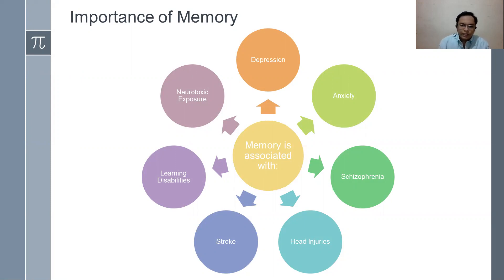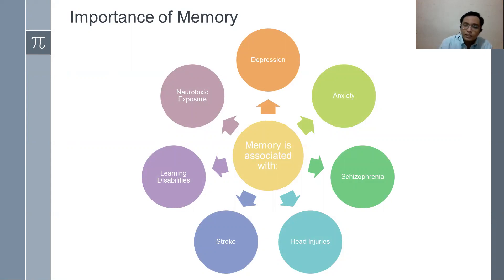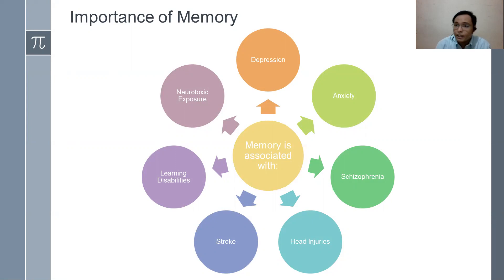In Weschler's idea, memory is associated with the following: it can be used in terms of diagnosing depression, anxiety, schizophrenia, and organic damages like head injuries. Memory can also be used in predicting stroke and determining cumulative disabilities. It can also be used when there is neurotoxic exposure.